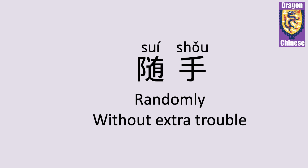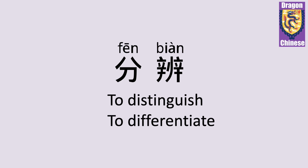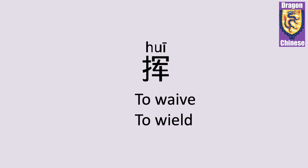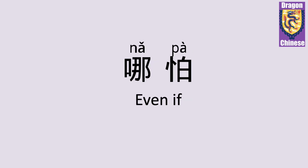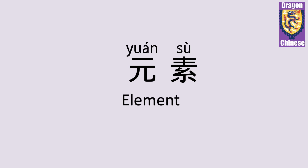分辨 — to distinguish, to differentiate. 分辨. 灰 — to wave, to wield. 灰. 可见 — it can be seen that. 可见. 哪怕 — even if. 哪怕. 元素 — element. 元素.